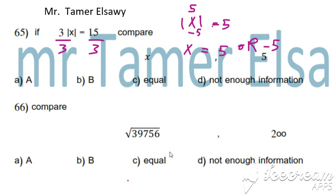Not enough information. Why? 5 equals 5, but negative 5 not equals 5, less than 5. We can't choose C or B or A. That's not enough information because we have two solutions.